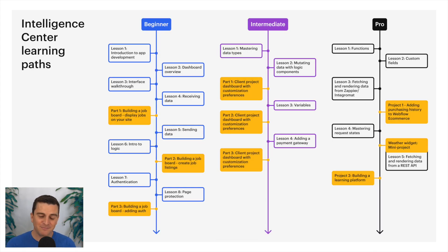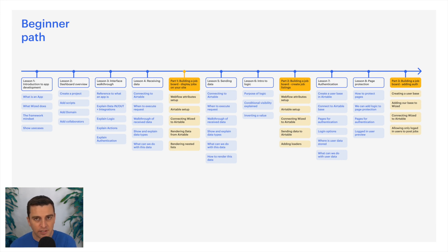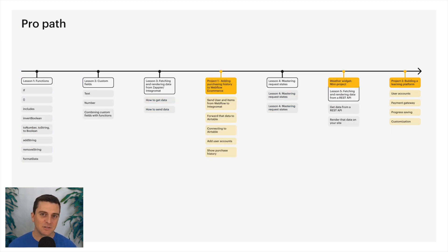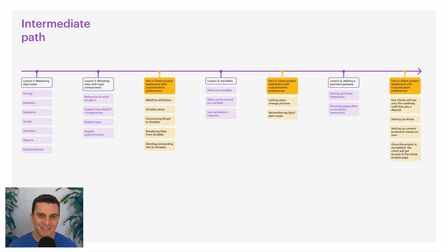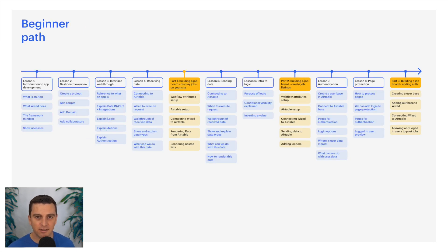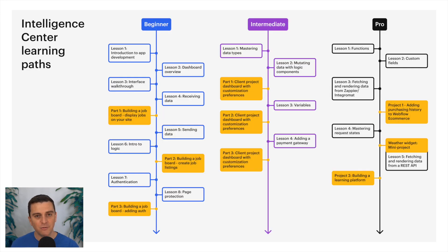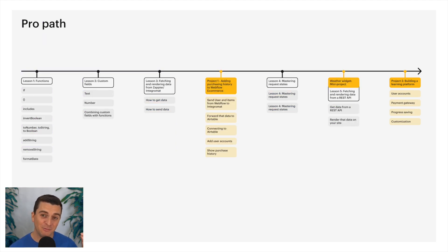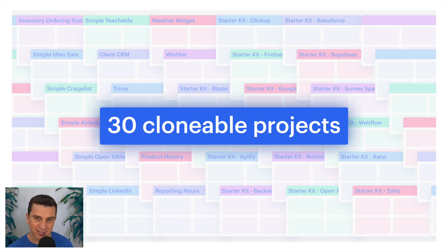There are three learning paths: beginner, intermediate, and pro. Each path has lessons for web app development principles and then a build walkthrough to show these principles inside Wizd. All of this is free as part of the Intelligence Center. We learn about data types like strings, numbers, booleans, arrays, variables, and objects. We learn about making requests to our applications and mutating data. After learning these development topics, we test our new knowledge by building applications that use these principles — real projects. And over the next six months, we will release over 30 clonable Wizd projects with free video walkthroughs and documentation so you can continue learning through pro-developed builds.